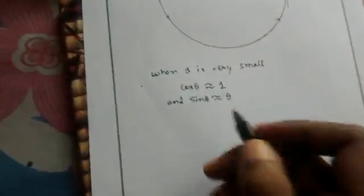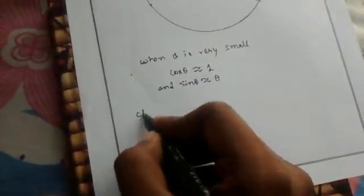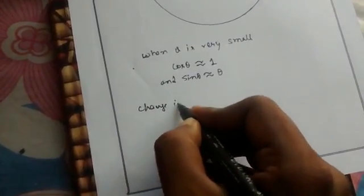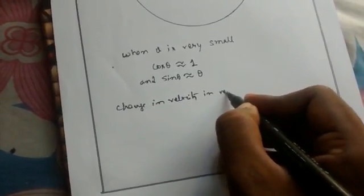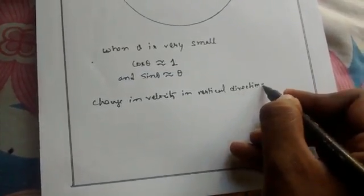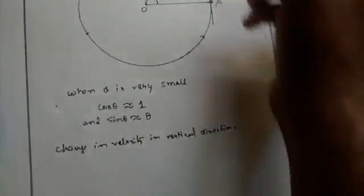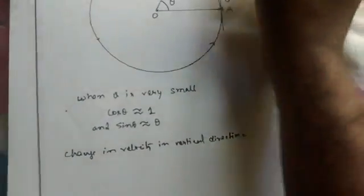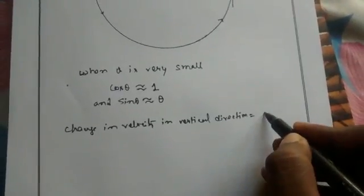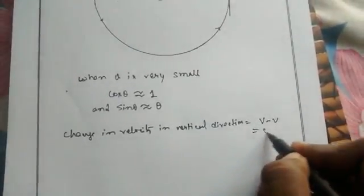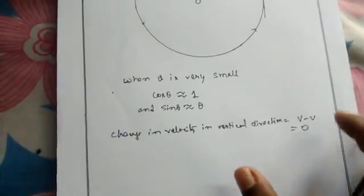So the change in velocity in the vertical direction: earlier it was v, and when the particle reaches point B the velocity again becomes v. So the net change in velocity is equal to v minus v, which is equal to 0. There is no change in velocity in the vertical direction.